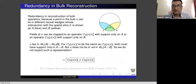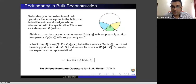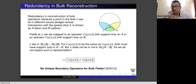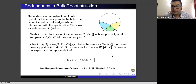Because of this, what happens is that the operators which have support on A cannot be equal to the operators which have support on B, but this is obviously not going to be true. This tells us there is no unique reconstruction of the bulk fields at point x. This is where Almheiri, Dong and Harlow made their conceptual leap and pointed out that this has the same structure as that of a quantum error correcting code.